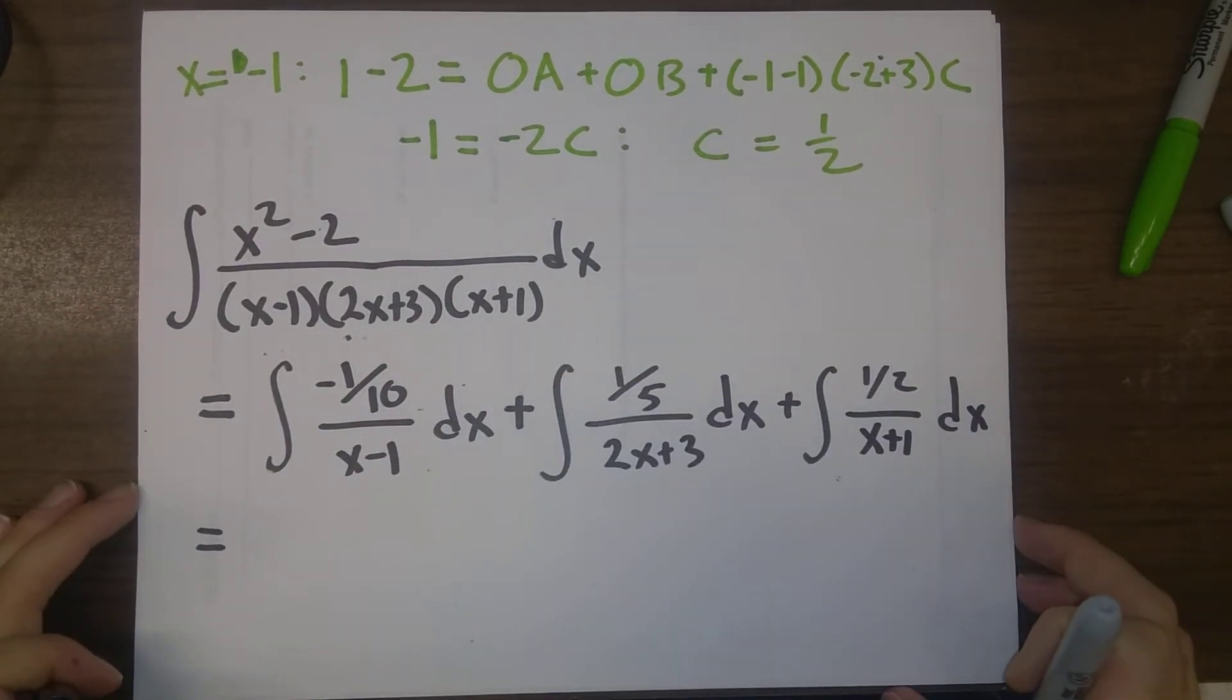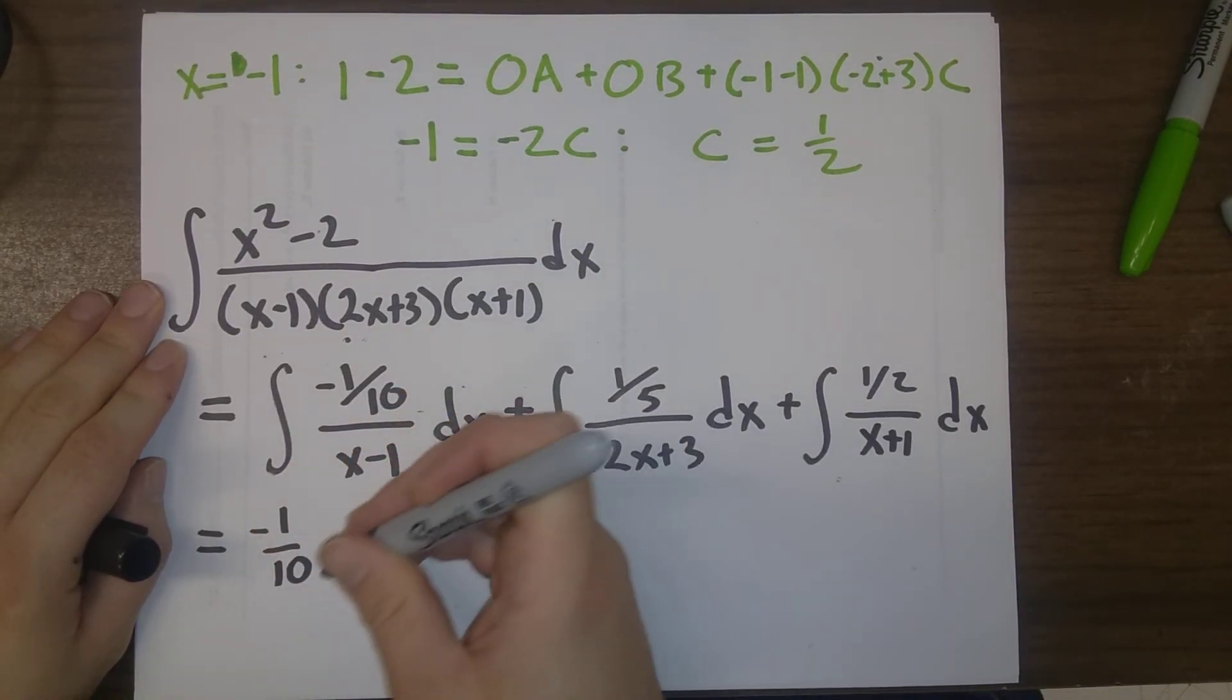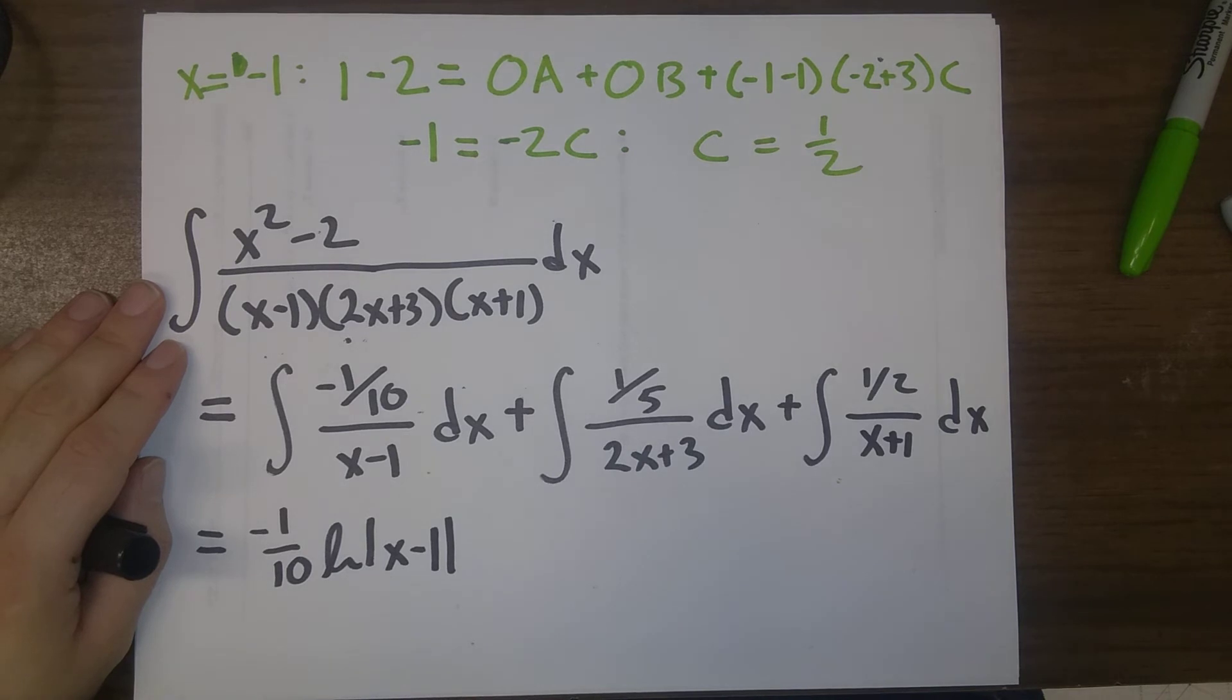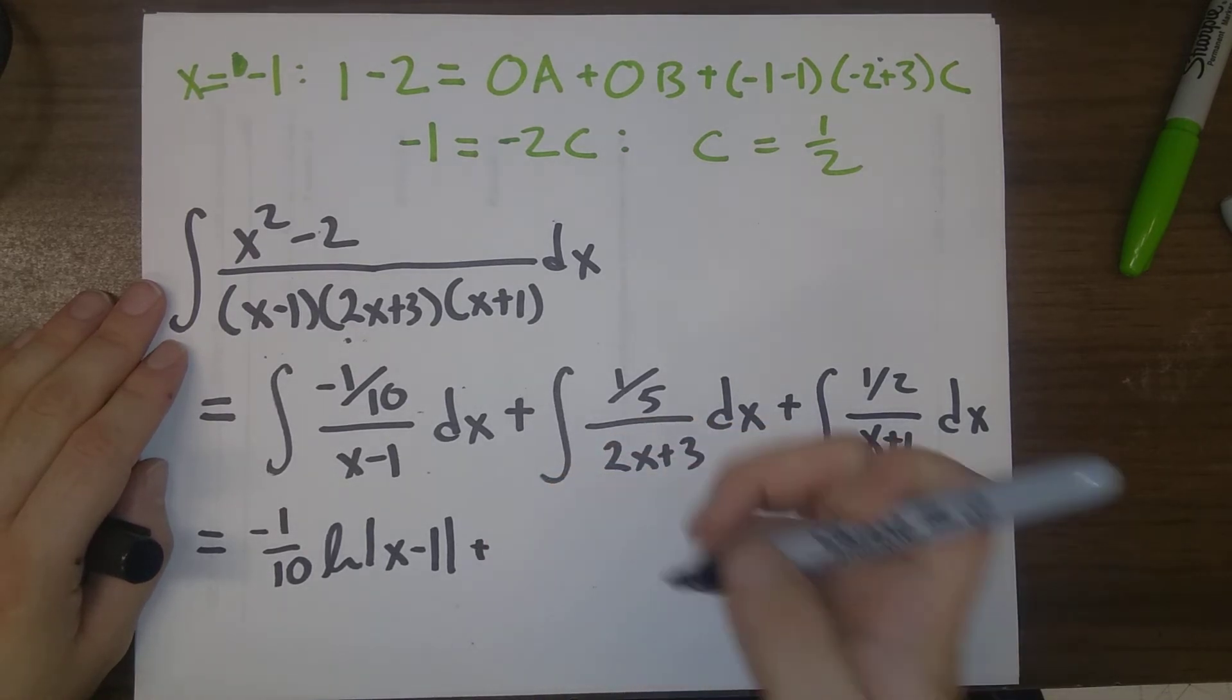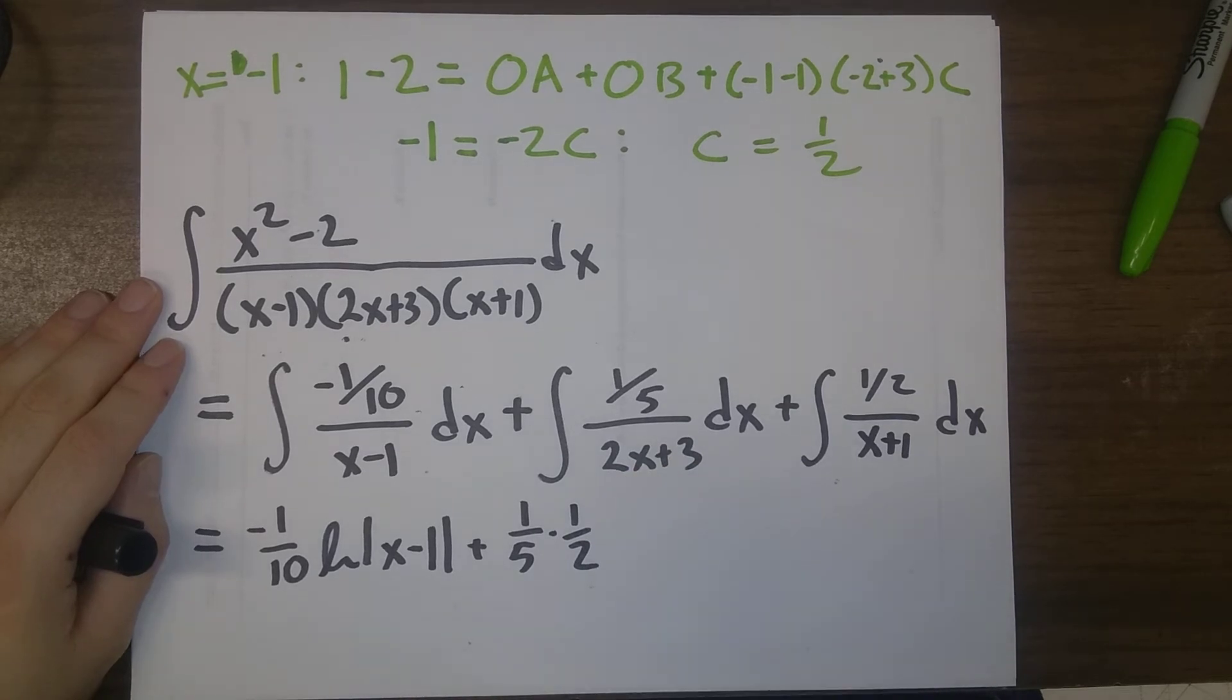And now, each one of these integrals is very easy for us to do. So, minus 1 tenth times natural log of absolute value of x minus 1 plus 1 fifth times 1 half. We really should be using substitution here, u is equal to 2x plus 3.